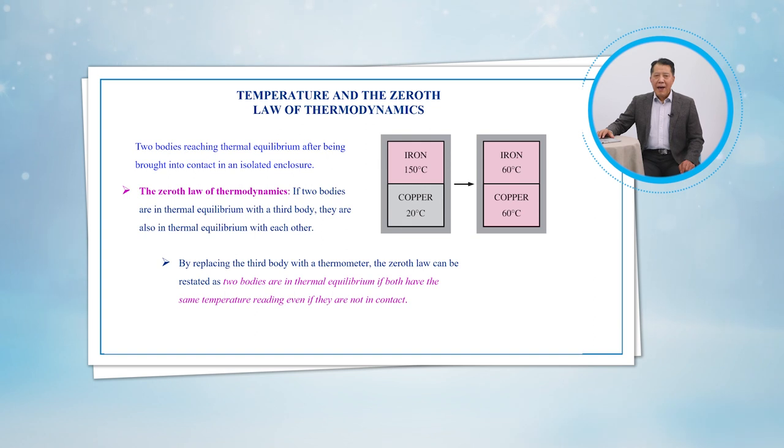By replacing the third body with a thermometer, the zeroth law can be restated as: two bodies are in thermal equilibrium if both have the same temperature reading, even if they are not in contact.